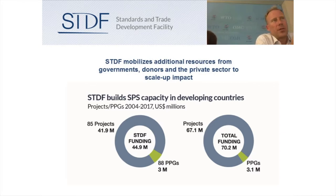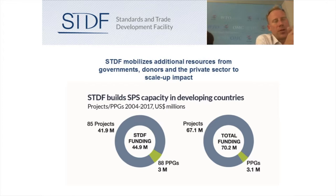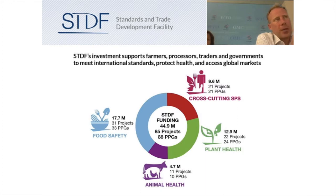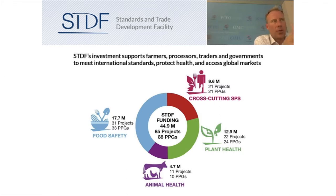The STDF Trust Fund has generated approximately 60 million US dollars since 2004, of which approximately 45 million has been spent on STDF projects and project preparation grants. Through those projects, additional resources have been generated from governments, other donors, and the private sector. The funding is divided among the three SPS sub-areas of food safety, animal health, and plant health, while the STDF also funds cross-cutting SPS projects that have components in multiple areas.